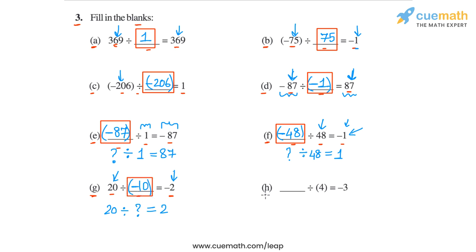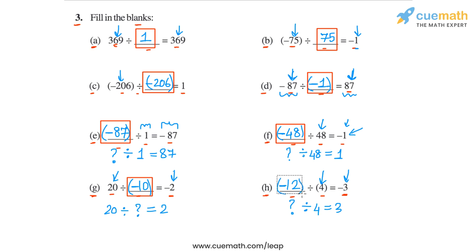And finally, in part h, we have blank divided by 4 is equal to minus 3. Ignoring the negative sign, think about what integer divided by 4 gives us 3. That number is 12, so we first put 12 here. Then we see that the divisor is positive but the quotient is negative, so the dividend must be negative. So we must have minus 12 here. In part h, the answer is minus 12.